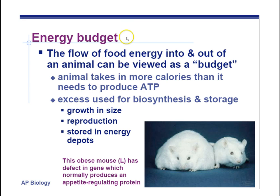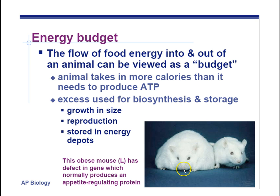Energy budget. You can think of food energy coming into and out of an organism as a budget, kind of like a bank account. If you have extra money, you might save it in a savings account or invest in stocks. If you're short on money, you might need to borrow some to pay your bills. You can think of energy the same way. If we have excess energy, we use it for making stuff — tissue — and storage. That is stored as fat. This little guy has a lot of extra storage of energy within him.